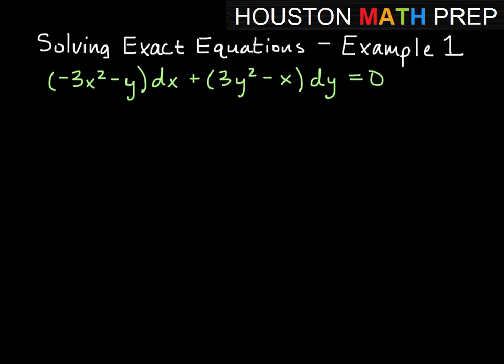Alright, example one of solving exact equations. So we have the quantity negative 3x squared minus y, dx, plus the quantity 3y squared minus x, dy.